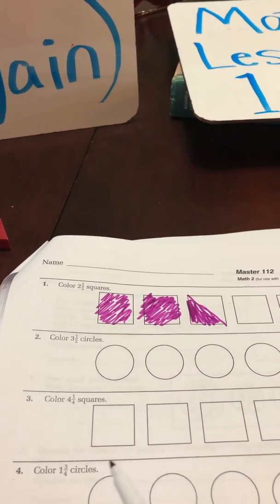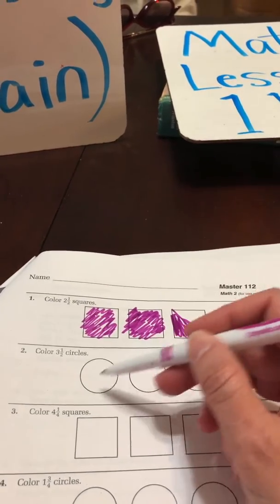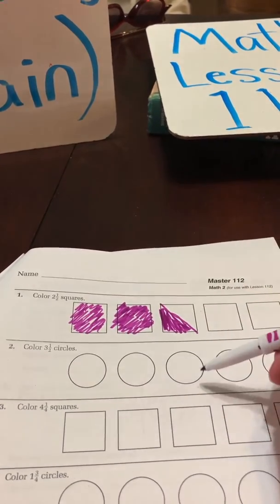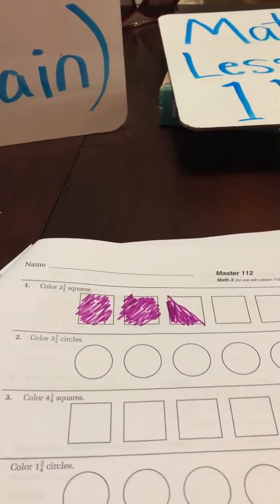Now this one says color three and a half circles. Same deal. One, two, three and a half. I think you can figure the rest of these out on your own.